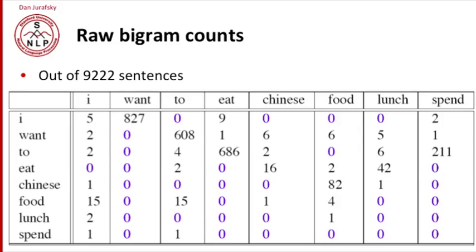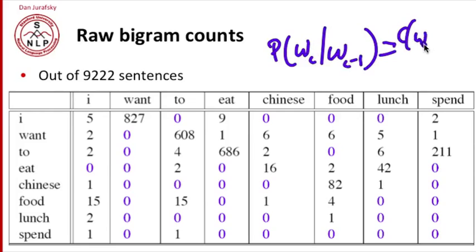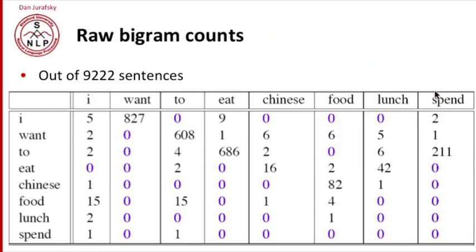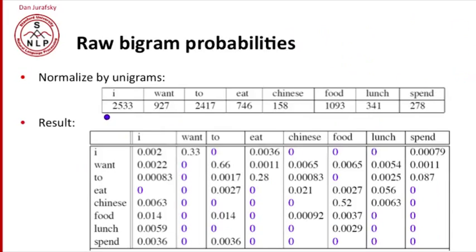In order to turn these counts into probabilities, all we have to do is normalize by a unigram count. Because remember, the probability of a word i given the word i minus 1 is the count of word i minus 1, word i over the count of word i minus 1. So we need to divide these joint counts of the two words by the count of the previous word. Here's the unigram counts we're going to need to compute those probabilities.